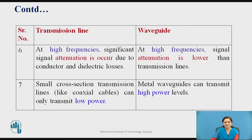At high frequencies, significant signal attenuation occurs due to conductor and dielectric losses in a transmission line. At high frequencies, the signal attenuation is lower in a waveguide compared to the transmission line. Small cross-section transmission lines such as coaxial cables can only transmit low power, while metal waveguides can transmit high power levels.